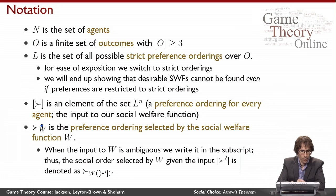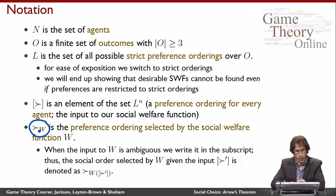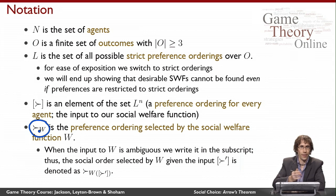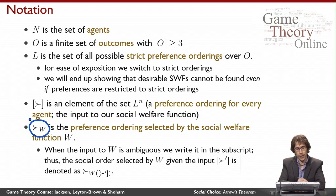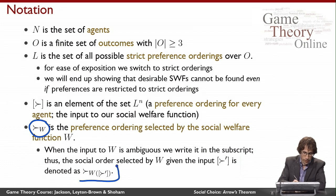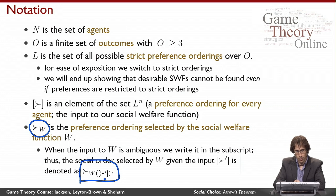I'll denote with this symbol an ordering relation subscripted by W — the preference ordering that is actually output by the social welfare function. When the input to W is ambiguous, I might use a more complicated notation saying precisely which ordering it is. This notation means the preference ordering output by W when given a particular preference profile as input, which matters when I change which preference ordering I'm talking about.